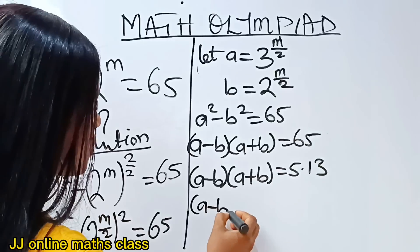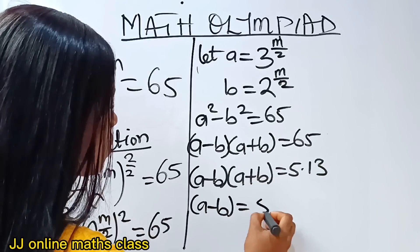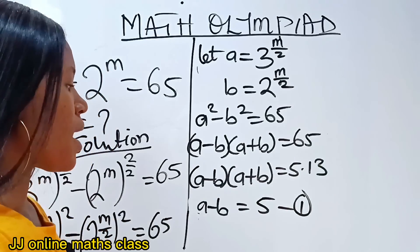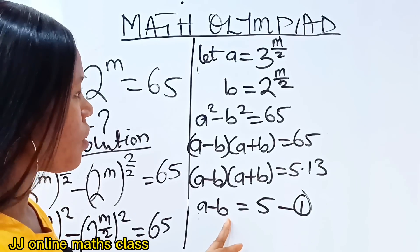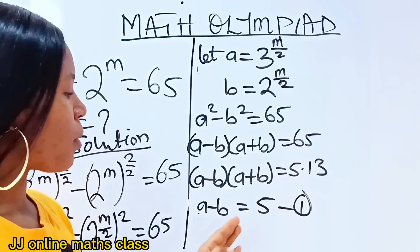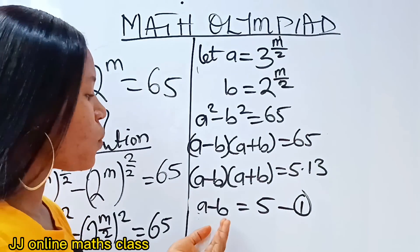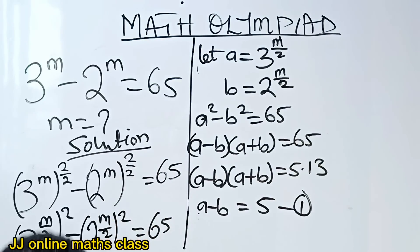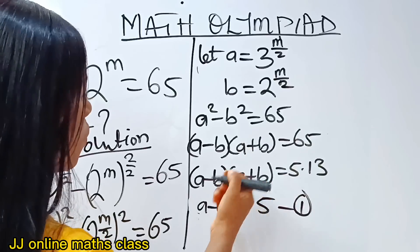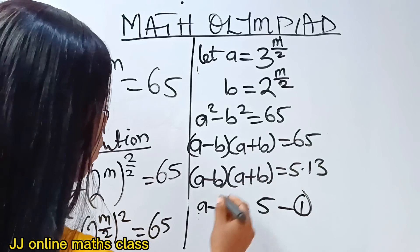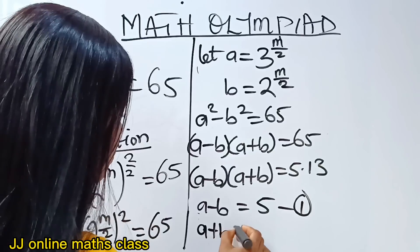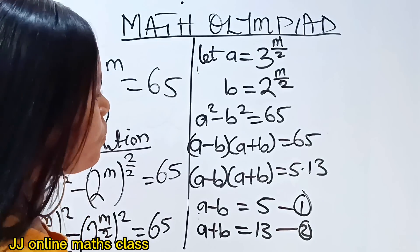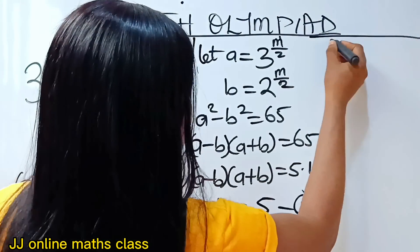So that means that a minus b is equal to 5 — let's call this equation 1. Remember we are not looking for a or b; rather we are looking for m. But this is the way we will follow to get our m. We can also say that a plus b is equal to 13 — and this is equation 2.